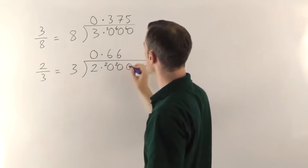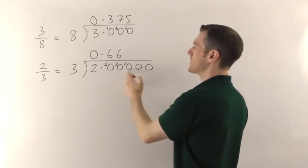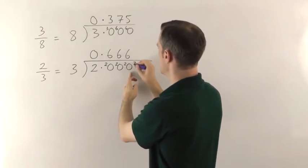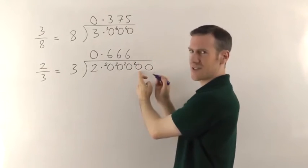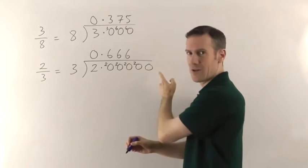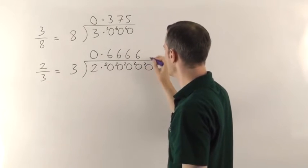3s into 20 goes 6 times remainder 2 and then it's 3s into 20 again which is 6 times remainder 2 and it's 20 again. In fact you can see what's going to happen here. This is going to be 20 all the way along because every time it's going to go in 6 times remainder 2. 6 times remainder 2.